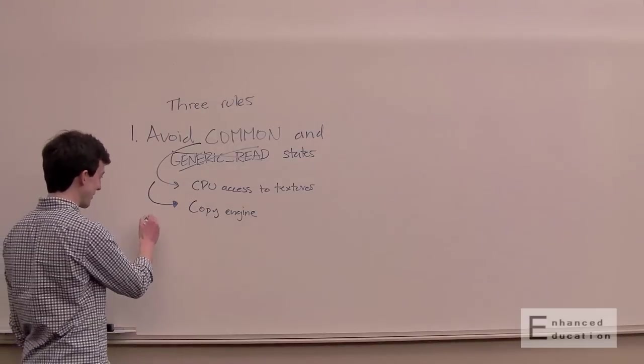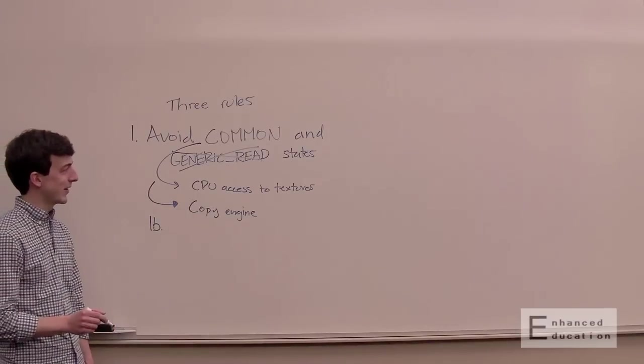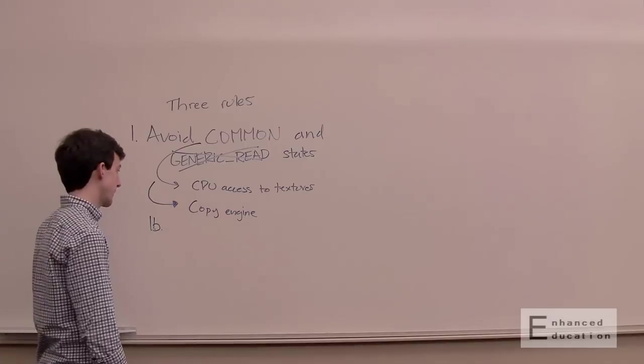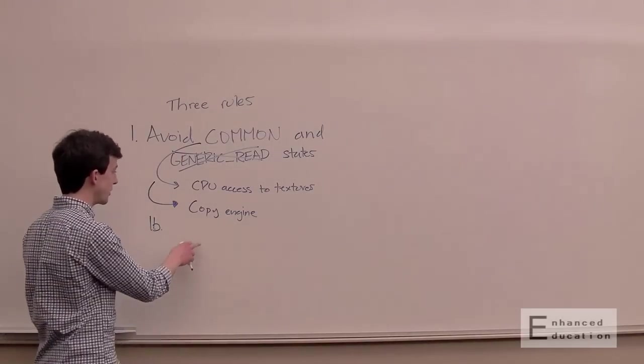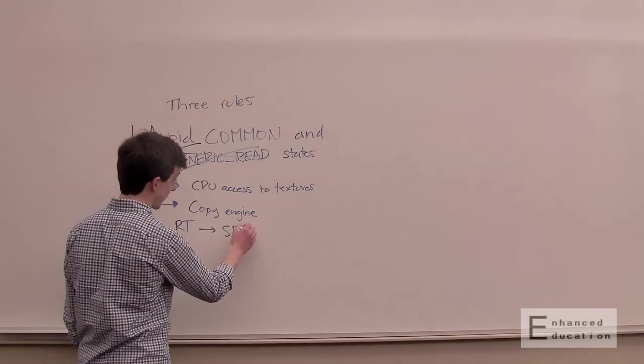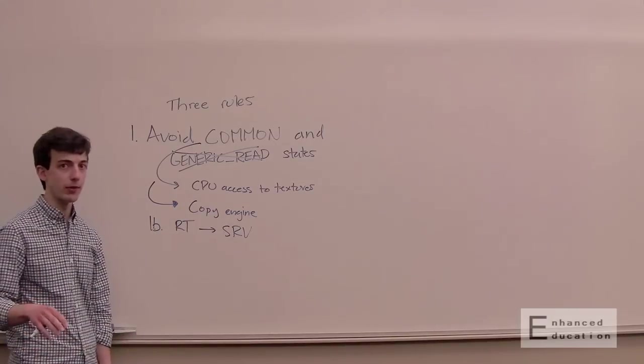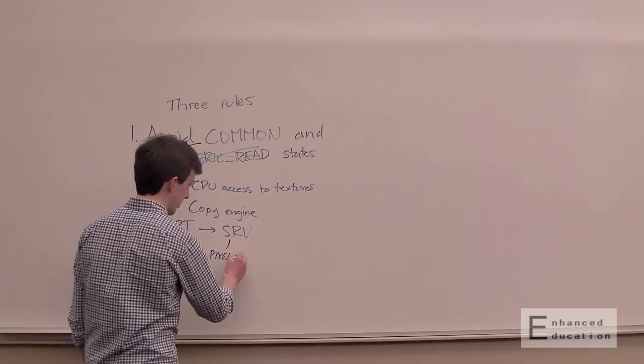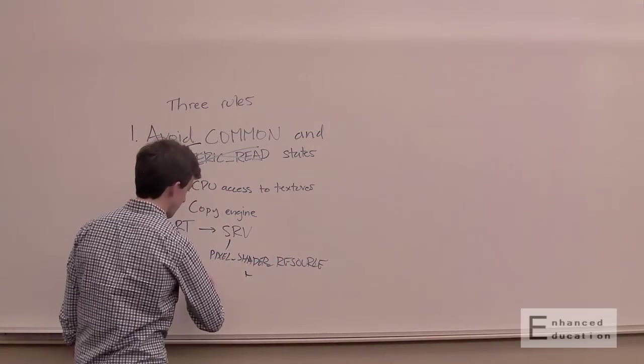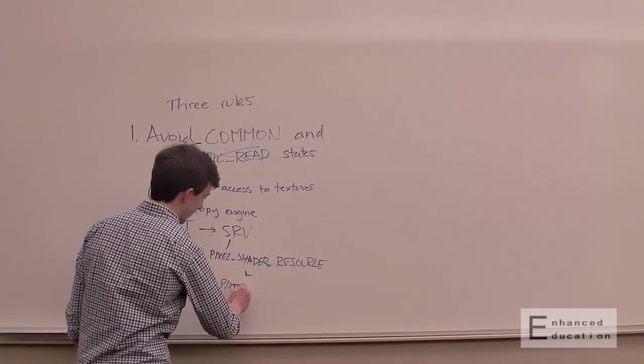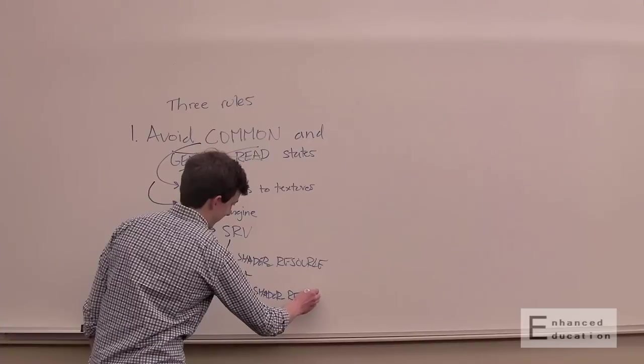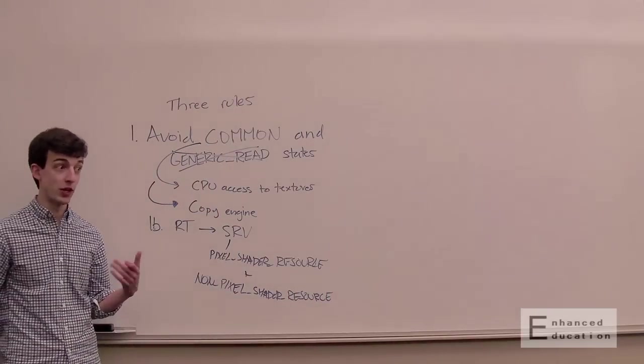The second rule, we're going to add a second part to this rule. We're going to call it 1B. And that is always transition to the most constrained set of states that you can live with. So it might be more convenient or easy in an engine to basically always transition to thinking of states as something like, okay, it's a render target and now I want to use it as an SRV. So like conceptually, you're doing an RT to SRV transition. And in Direct3D12, there's actually two different states that correspond to an SRV. There is the pixel shader resource and the non-pixel shader resource. So non-pixel shader obviously corresponding to vertex, hull, domain, geometry, and compute.